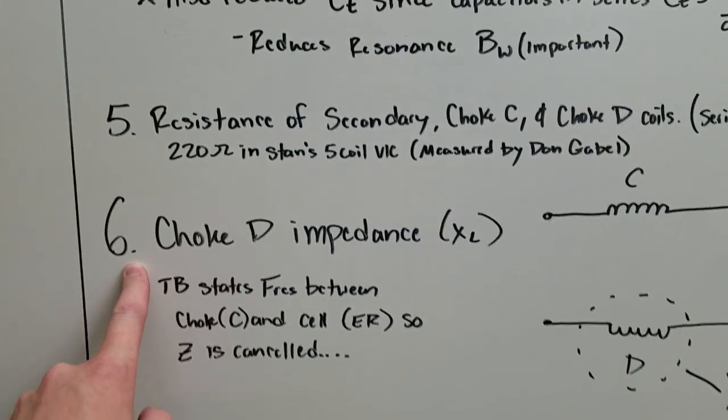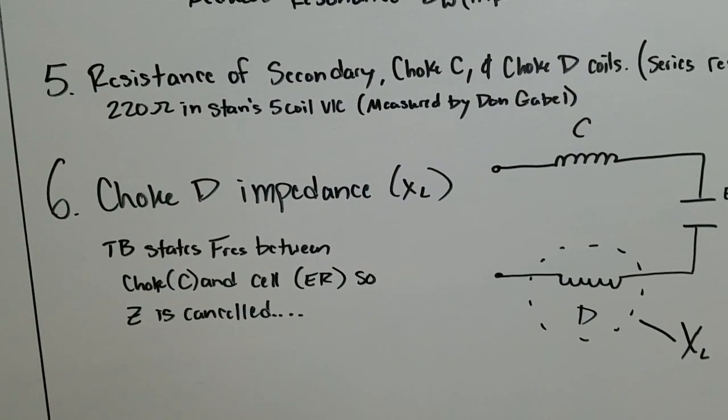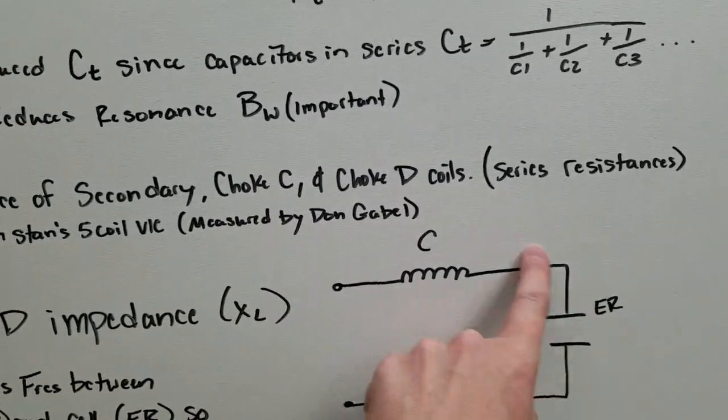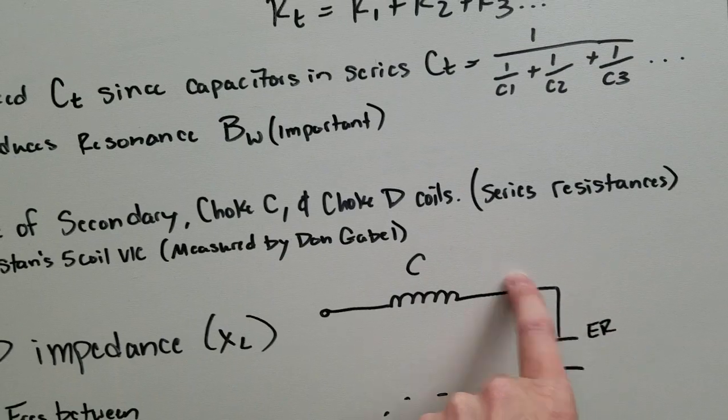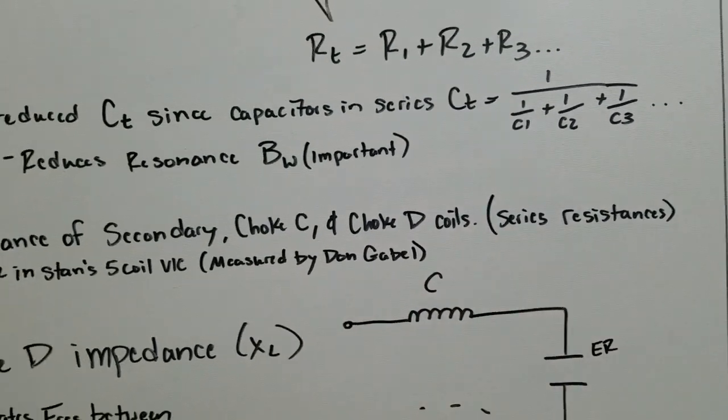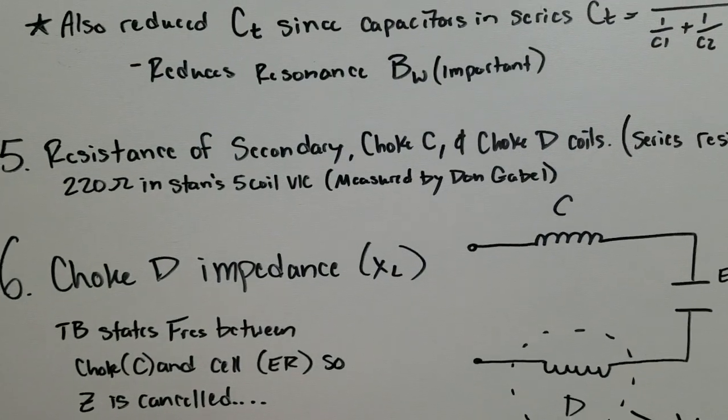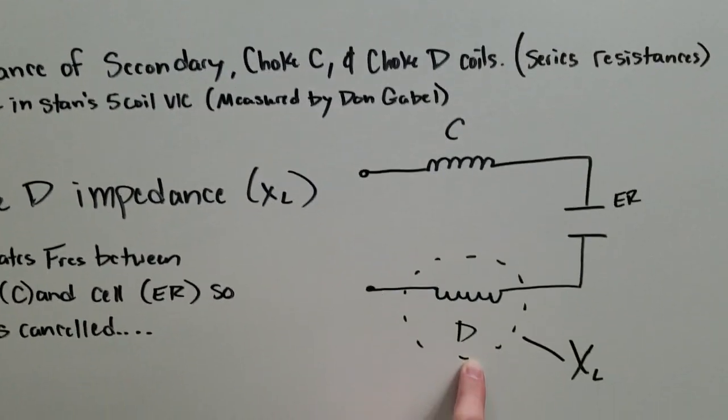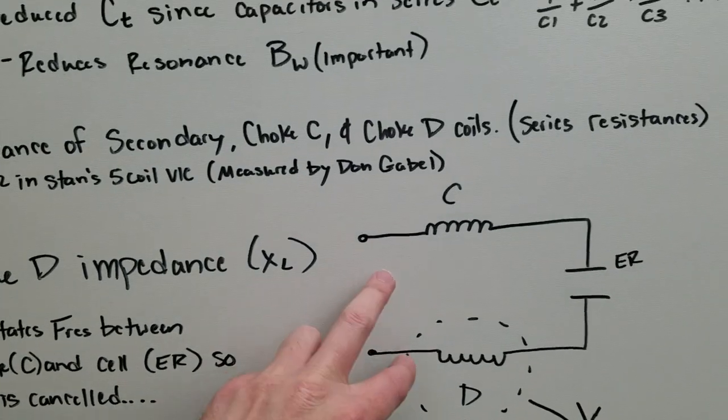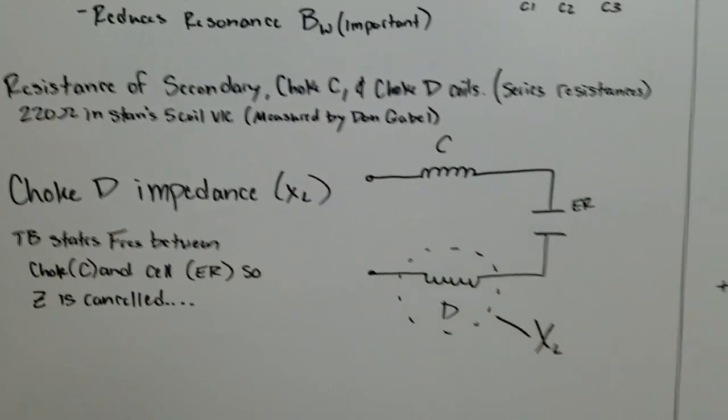Now number six, the choke impedance. First off, the technical brief states that this choke and the cell are in a series resonance circuit. So their impedances cancel each other out. And he also says that this inductor here restricts the current. There's a lot more to that. And they actually flip-flop roles, but we'll get into that later.